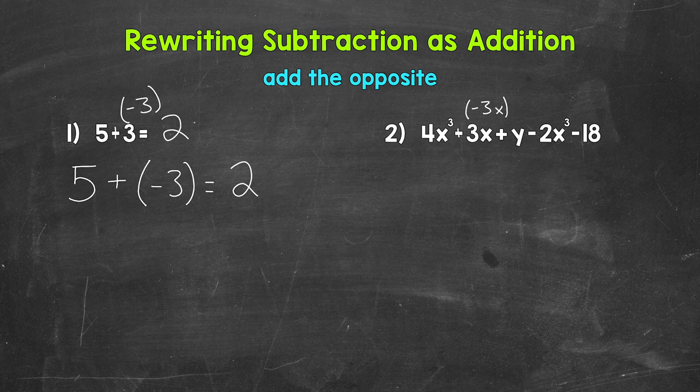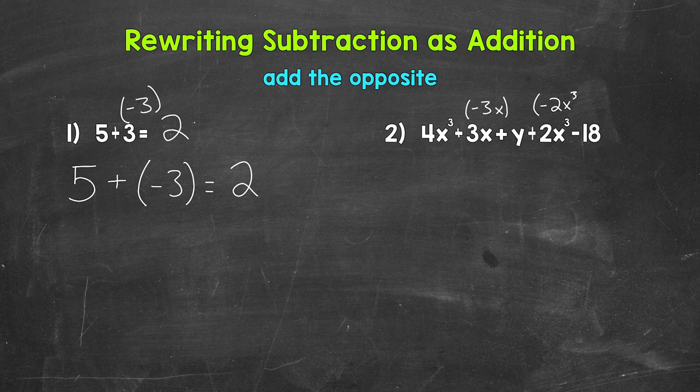Next, we are subtracting 2x cubed. So subtracting a positive 2x cubed. Let's add the opposite. So the opposite of positive 2x cubed is negative 2x cubed.